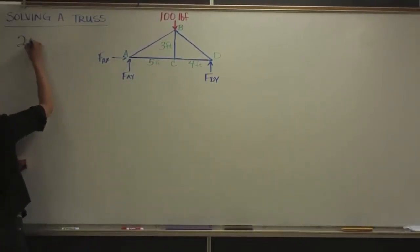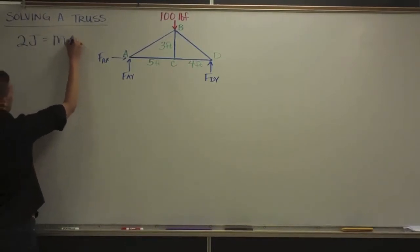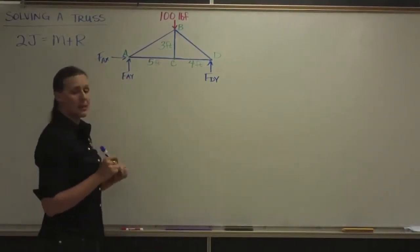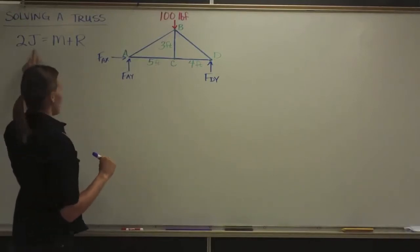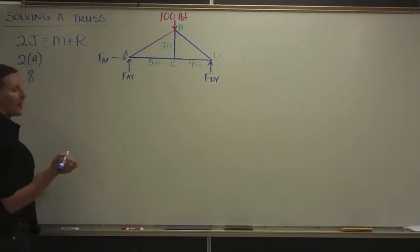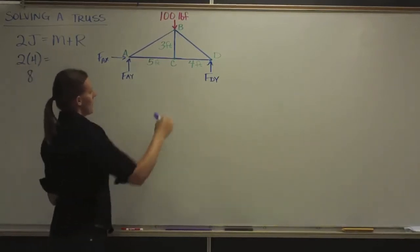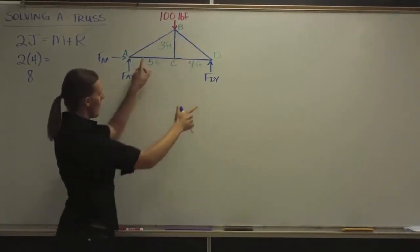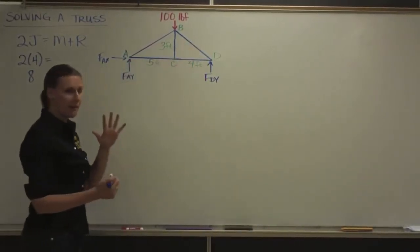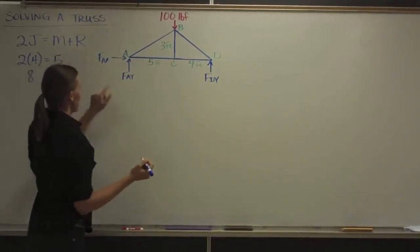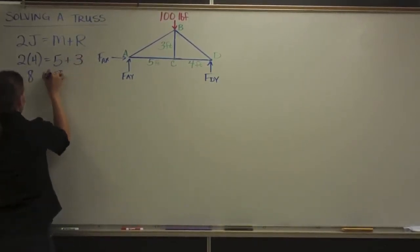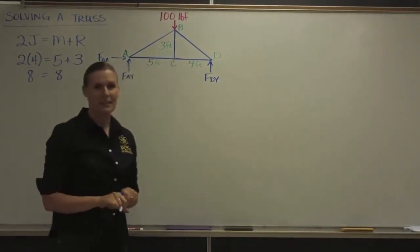The formula to do that is 2 times J equals M plus R. J represents the number of joints — A, B, C, and D — so that's 4 joints, giving us 8 on the left side. M is the number of members: 3 on the top, and the bottom section is 2 separate members A-C and C-D, giving 5 members total. The reaction forces are F-A-X, F-A-Y, and F-D-Y — that's 3. Five plus 3 equals 8, so the formula works out. This truss is statically determinate and we can solve it.